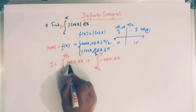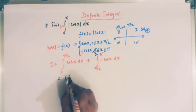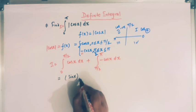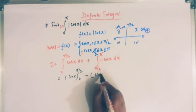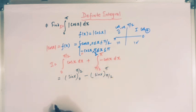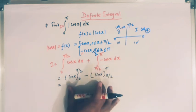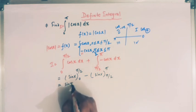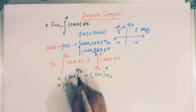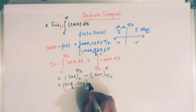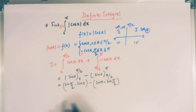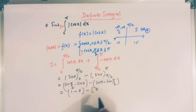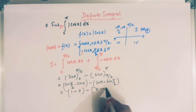Now, the integral of cos x is sin x, with limits from 0 to pi by 2, and here we have minus sin x with limits from pi by 2 to pi. We simplify this as sin(pi/2) minus sin(0), and for the second part, minus of sin(pi) minus sin(pi/2). The value of sin(pi/2) is 1, sin(0) is 0, sin(pi) is 0, and sin(pi/2) is 1.